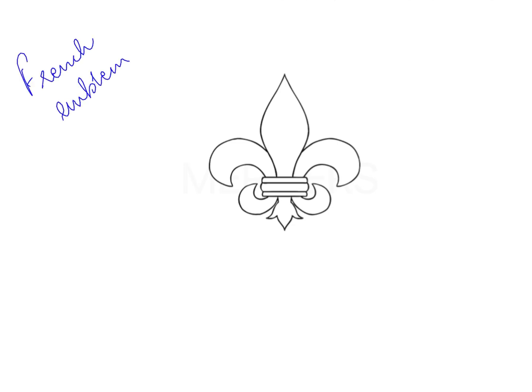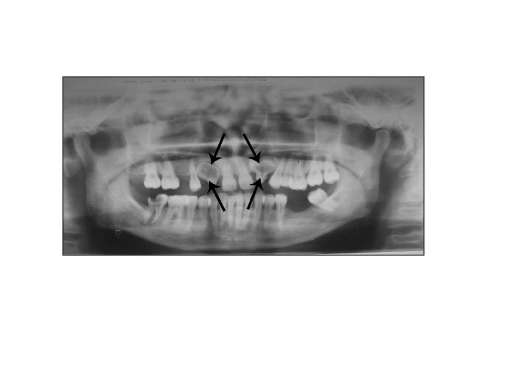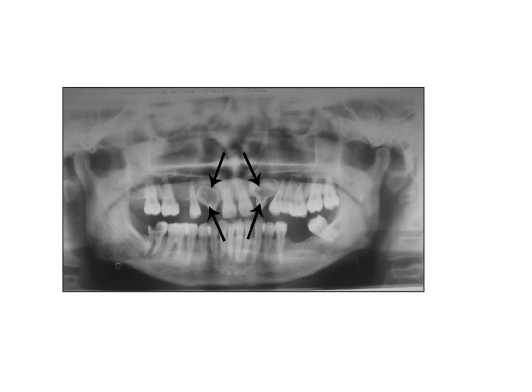In addition, this condition is also called the French emblem sign — this was a PGI question. It is called the fleur-de-lis or French emblem sign, a term given for dens invaginatus. Now, what I want to show you is that while we just saw an IOPA, they may also give you an OPG and ask you to identify the structure.